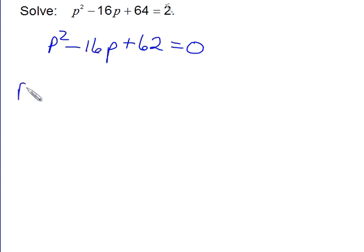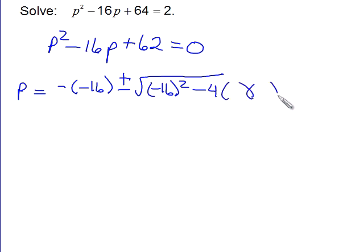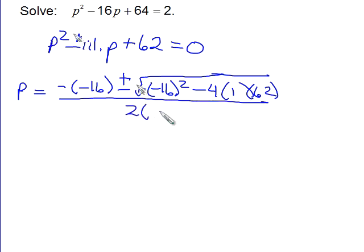So the quadratic formula says p equals the opposite of whatever b is, b is negative 16, plus or minus the square root of whatever b is, squared, b is negative 16, minus 4 times a times c. So looking back, a is really 1, and c is 62, and this is all divided by twice a, and a is 1.